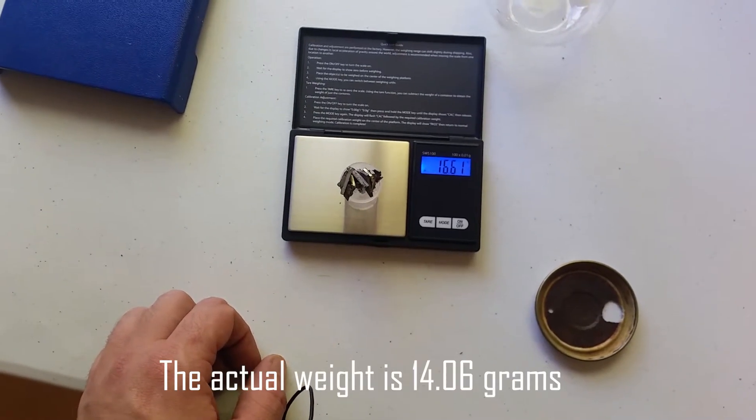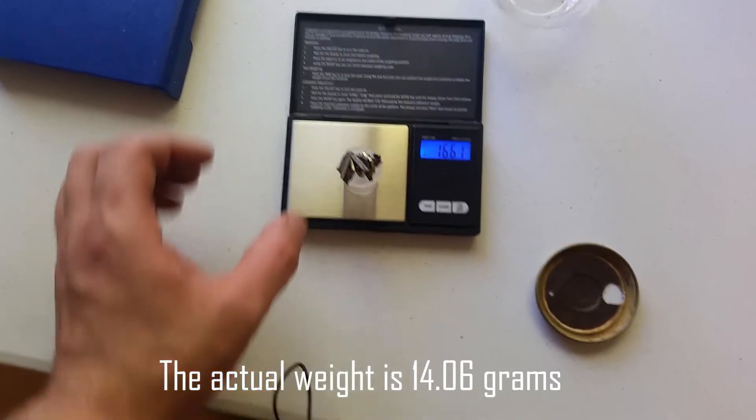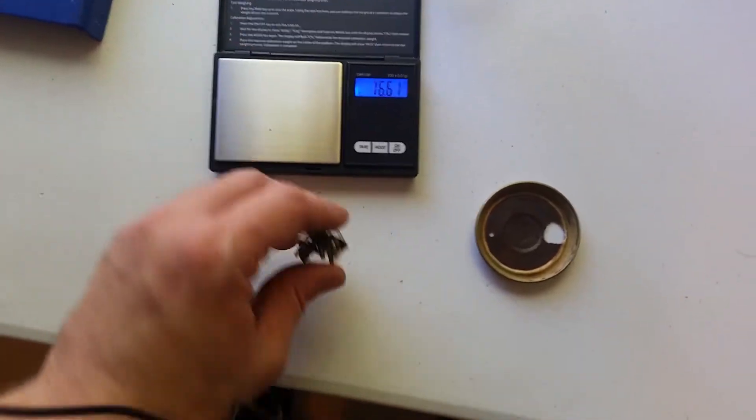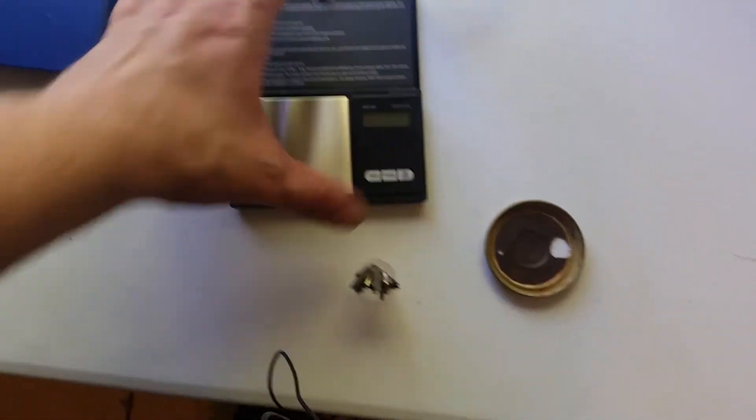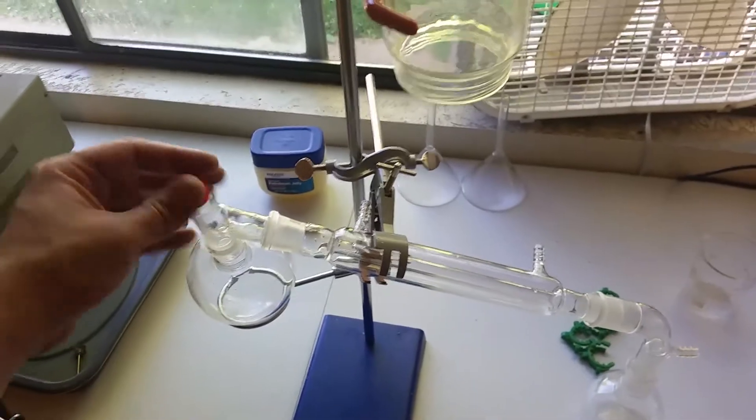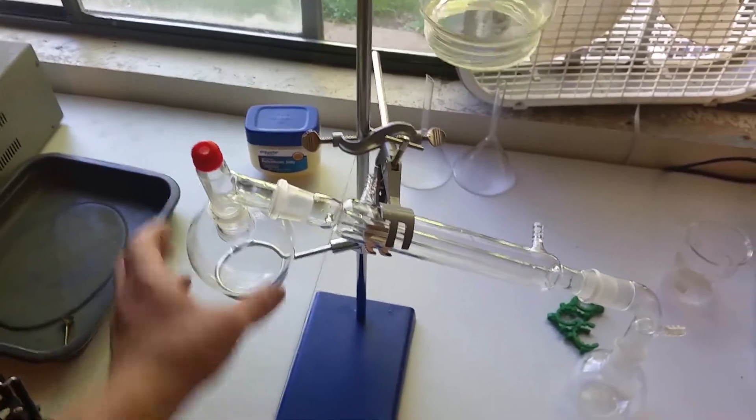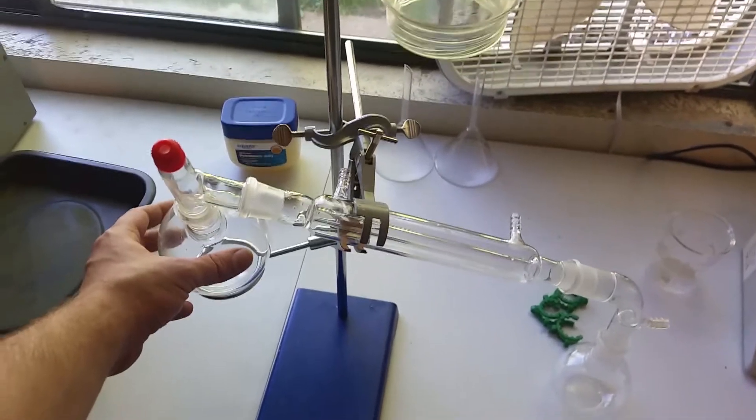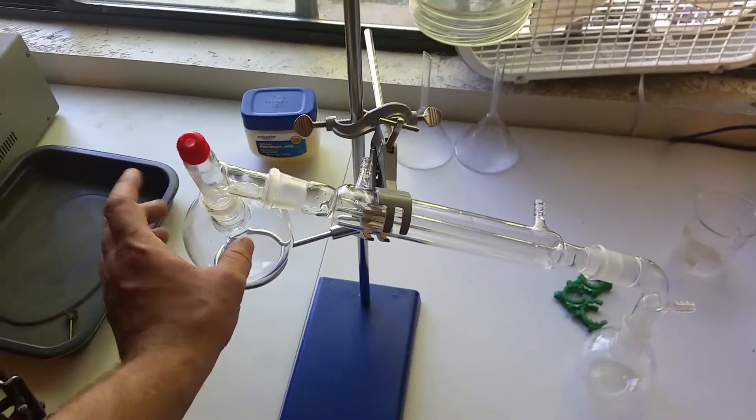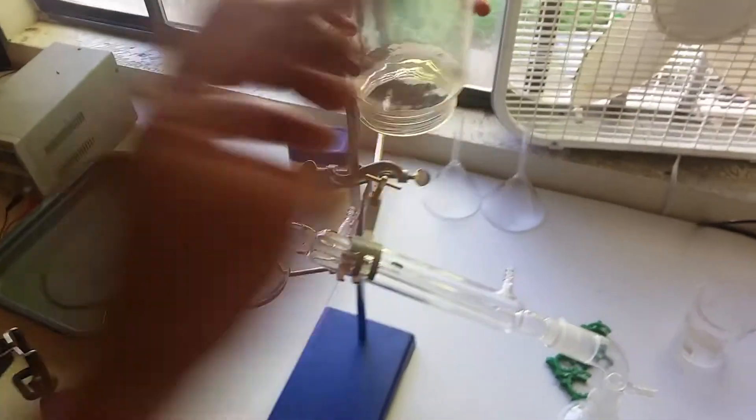It looks like 16.61 grams. Okay, so this is what I'm going to use to soak it in hydrogen. We're going to be putting sodium hydroxide and aluminum in here to generate hydrogen, and then pump it up to this jar.